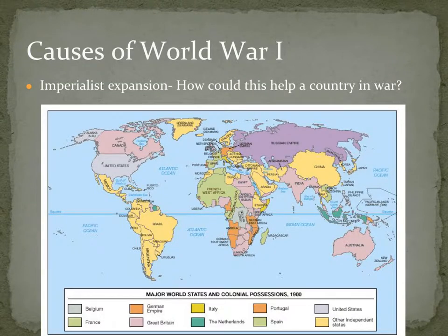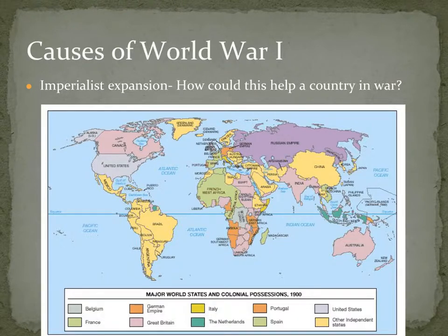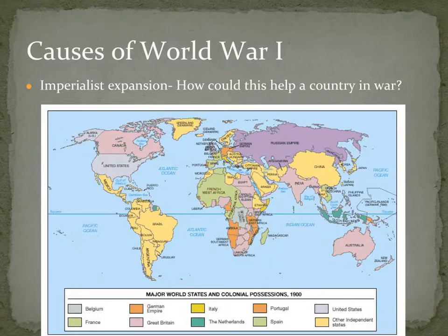Another cause is imperialist expansion. Imperialism led to increased competition between European powers, but it also made this war more global and more deadly. These European nations had huge empires throughout the world, giving them access to more resources and more people to potentially help them in war than ever before because of these global overseas empires.